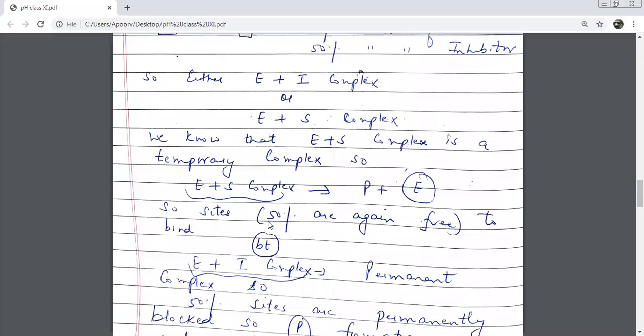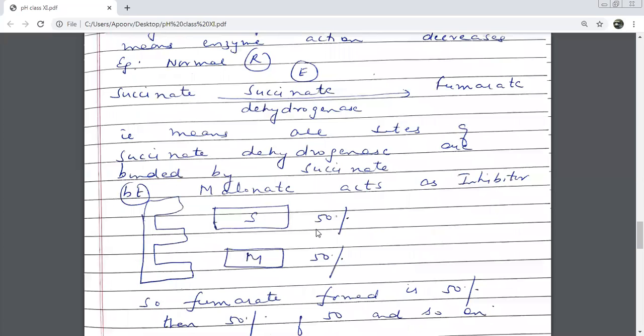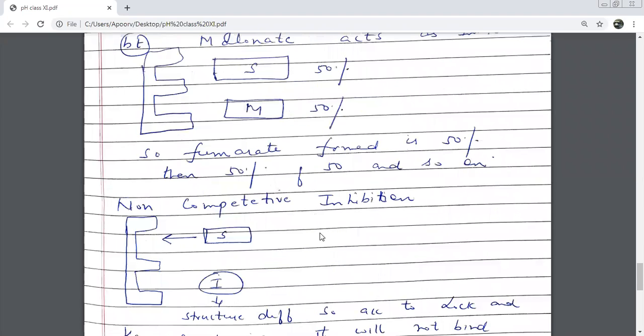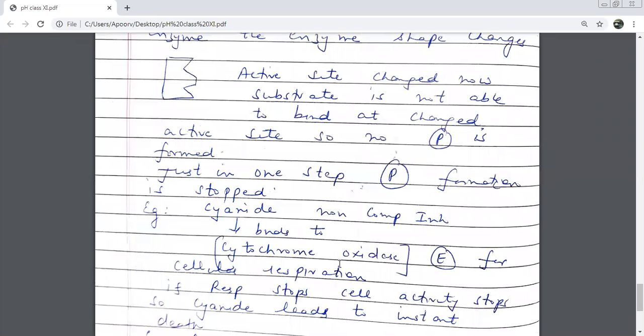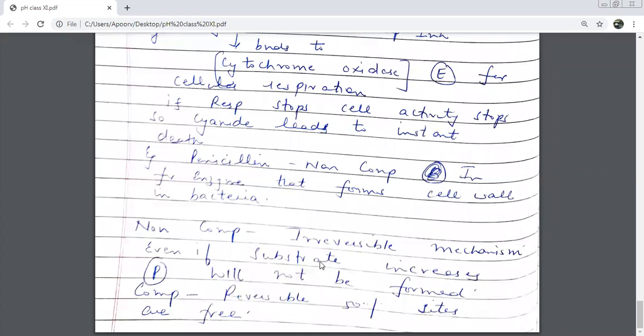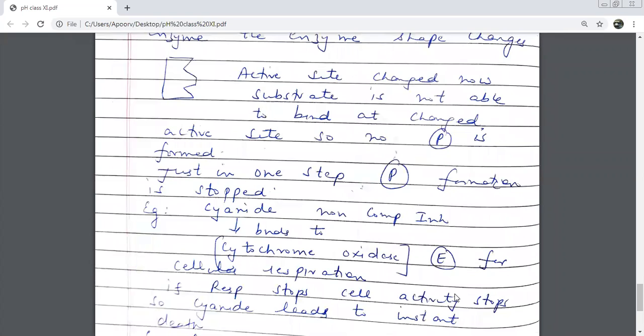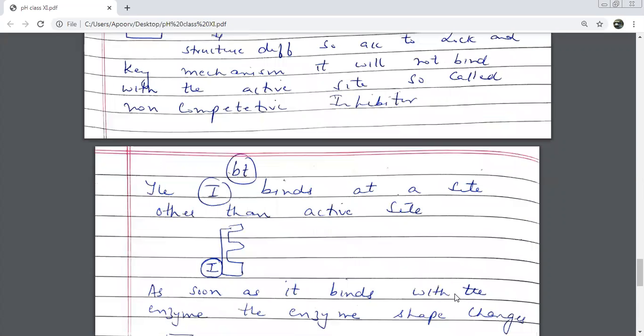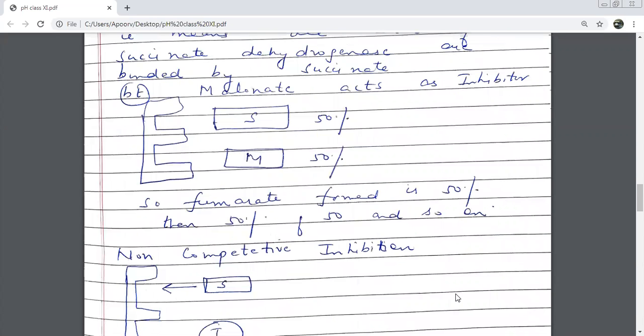So let's do this very quickly. The conclusion, the main conclusion about competitive and non-competitive inhibition is this: that non-competitive is an irreversible mechanism. Even if substrate keeps on increasing, the product will not be formed. And competitive one is a reversible one. Because 50% sites are free.